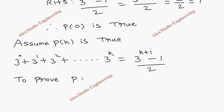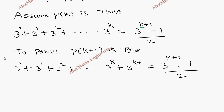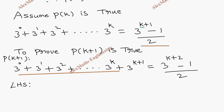So P of k plus 1: our series becomes 3 power 0 plus 3 power 1 plus 3 power 2 plus dot dot dot plus 3 power k, then the next term is 3 power k plus 1, which equals 3 power k plus 2 minus 1 by 2. This is our expression for P of k plus 1. Now on the left hand side, this entire sum is replaced by the P of k assumption, so it becomes 3 power k plus 1 minus 1 by 2, and we add the next term 3 power k plus 1.